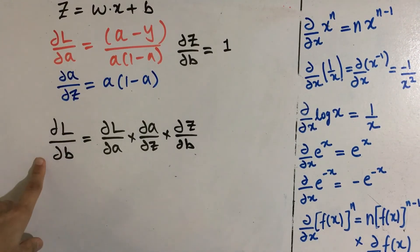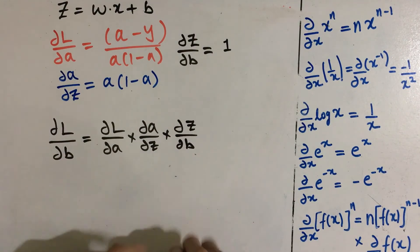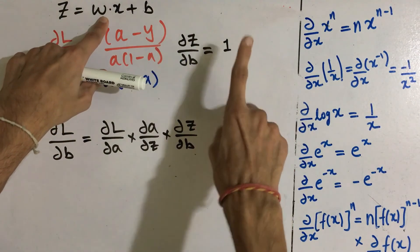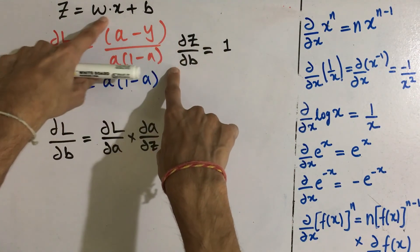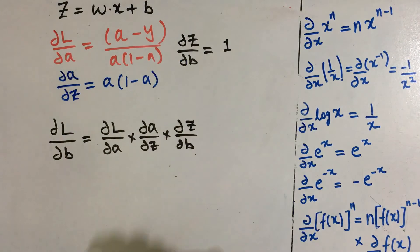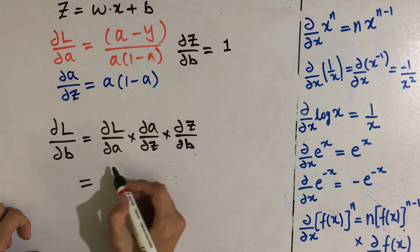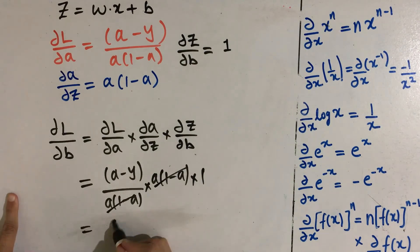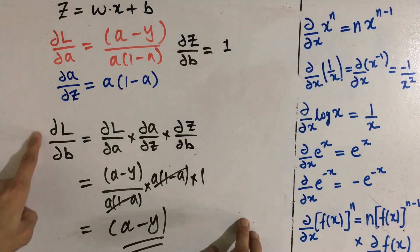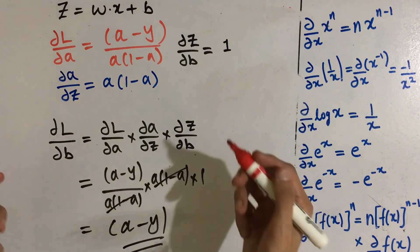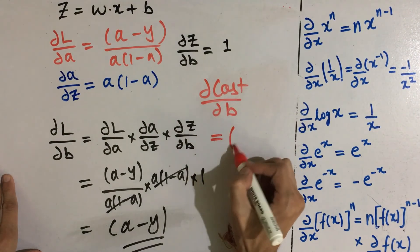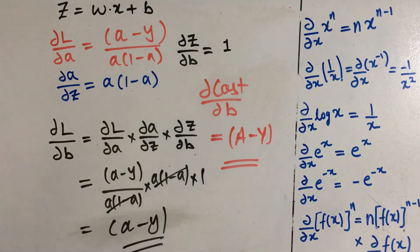Now let's find del cost by del b. To find del l by del b, we multiply the same three chain rule terms. Del z by del b is just 1, because b is the only term depending on b and its derivative is 1. Multiplying everything together, we get del l by del b as simply a minus y. This was for one observation. If we consider all observations, then del cost by del b is the matrix of (a − y).